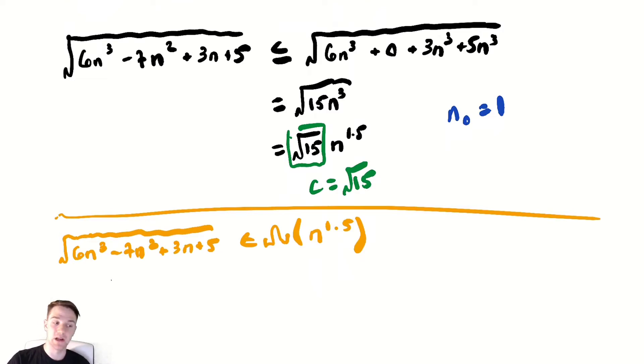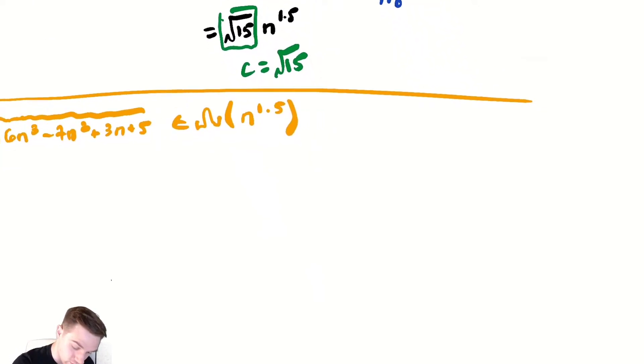Our trick we had used for big omega in the past was to drop all the positive terms. Negative 7n squared ain't positive last time I checked. So how are we going to deal with that? Well, one trick might be noticing that I will do some scratch work off to the side here. So note